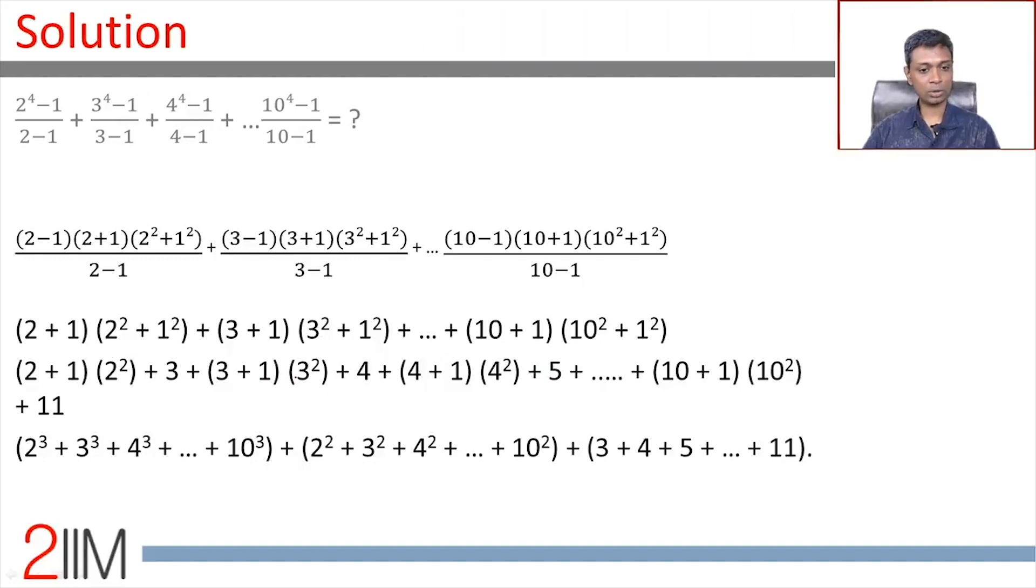Plus 4^2 + 5 and so on. Or we're looking at 2^3 + 3^3 + 4^3 all the way to 10^3, 2^2 + 3^2 + 4^2 all the way to 10^2, 3 + 4 + 5 all the way to 11. If we add this, this and this we should get the answer.